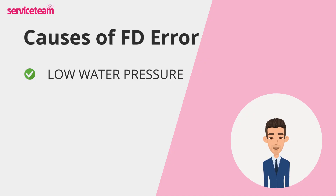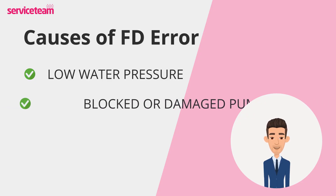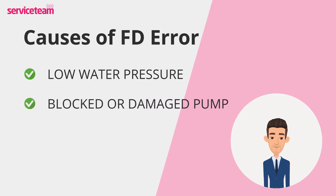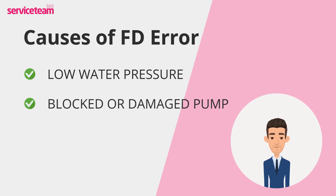If your pressure gauge is looking a little low, that could be your culprit. Next, check the pump. If your boiler is showing the FD error, it could be due to a blocked or damaged pump, which circulates hot water throughout the system.